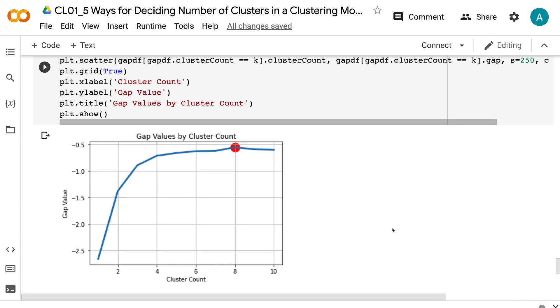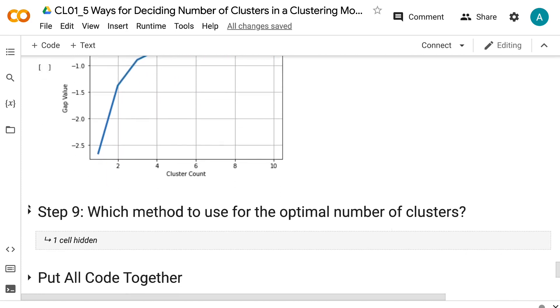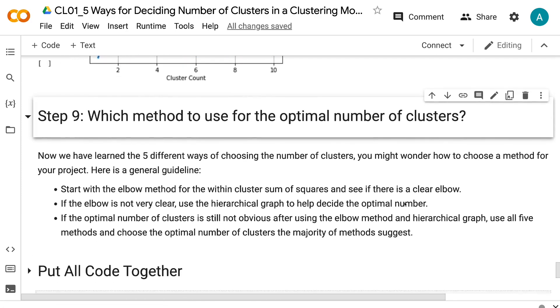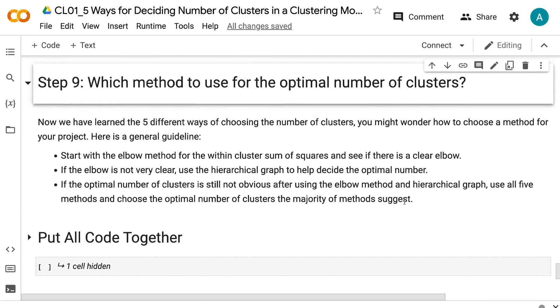Now we have learned the five different ways of choosing the number of clusters. You might wonder how to choose a method for your project. Here is a general guideline. Start with the elbow method for the within-cluster sum of squares and see if there is a clear elbow.